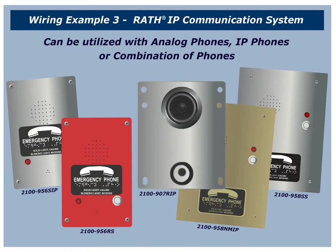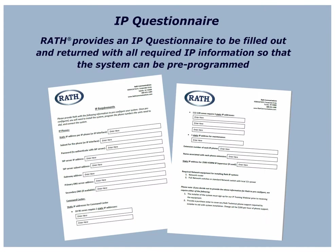Wiring Example Number 3: IP Communication System. The final wiring demonstration is for a complete system using analog phones, IP phones, or a combination of the two. We will discuss both an analog and IP installation. RATH provides an IP questionnaire to be filled out and returned with all required IP information so that the system can be pre-programmed.